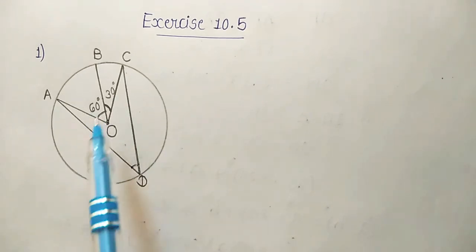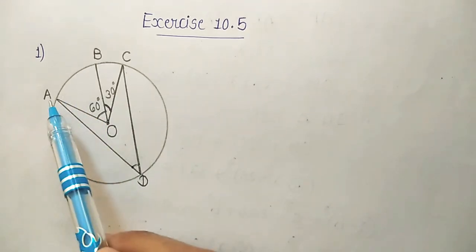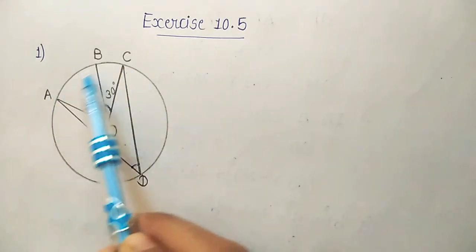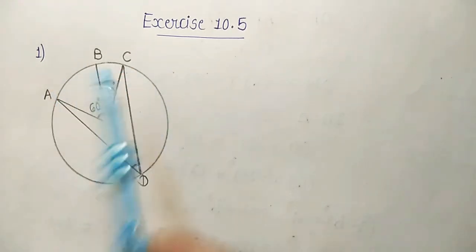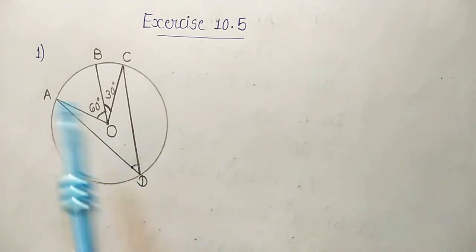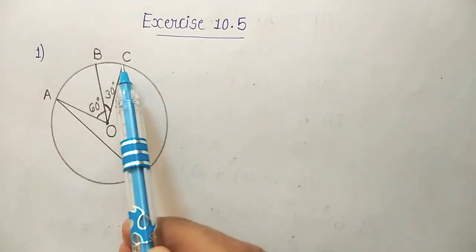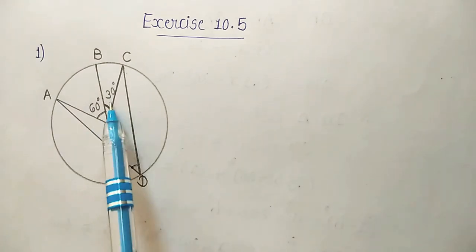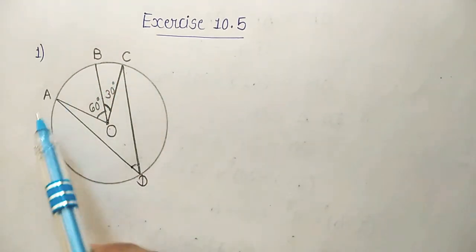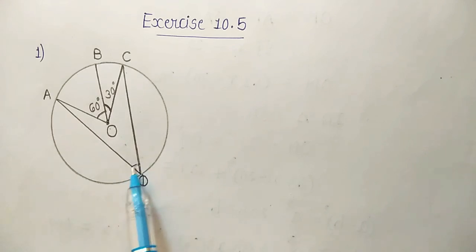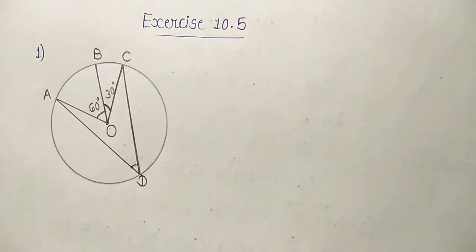Now, these 3 points A, B and C make one arc ABC. Where is point D? It is on the circle other than arc ABC. We have the value of angle BOC and angle AOB, then we have to find angle ADC.